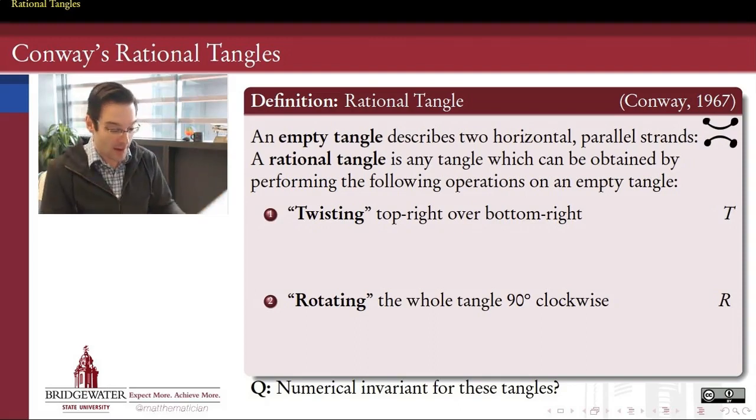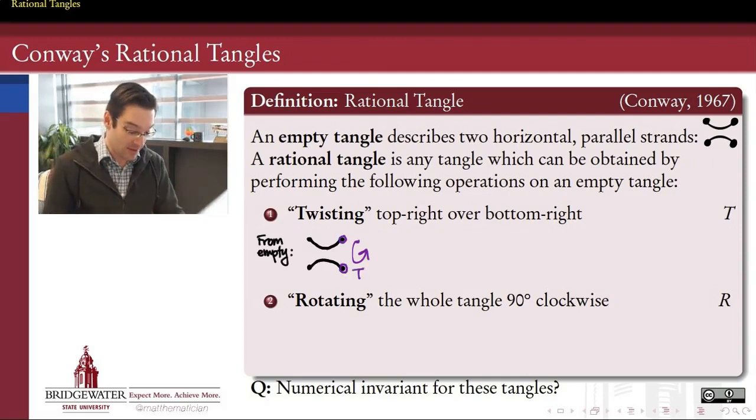So first of all, what are rational tangles to begin with? We start by defining what the empty tangle is, and the empty tangle is nothing but two horizontal parallel strands tethered at these four corners. And rational tangles, by Conway's definition, are anything that we can produce from that empty tangle through a series of two operations, twisting operation and a rotating operation.